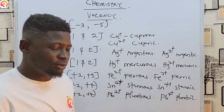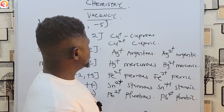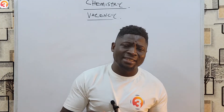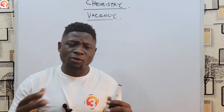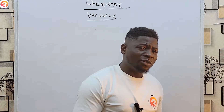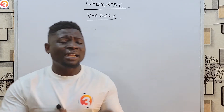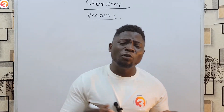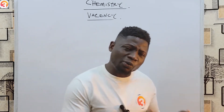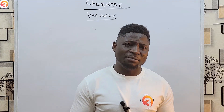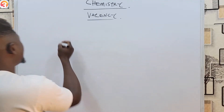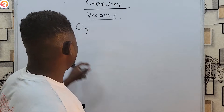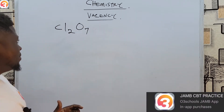Now we also need to know that the total valency of all atoms in a compound adds up to zero. If you know that the total valency of atoms in a compound adds up to zero, then with that knowledge you can find the valency of a particular element in a compound. For example, if given the compound Cl₂O₇, you can find the valency of chlorine.